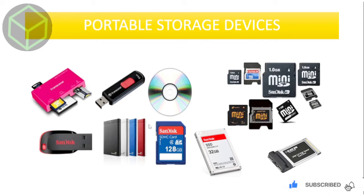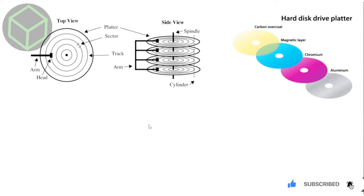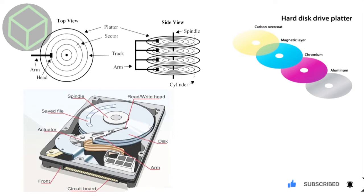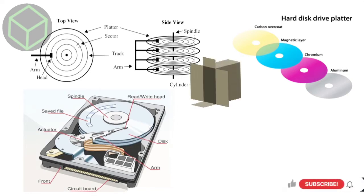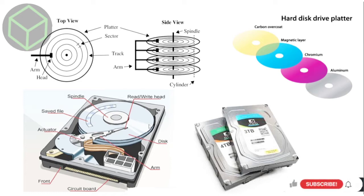Let's start with portable storage devices. The first example is the hard disk or hard drive. This is the main storage device fixed inside the CPU box. It has a huge storage capacity which can range from 500 GB to 5 TB. A hard disk is actually made up of multiple metallic disks coated with magnetic material.